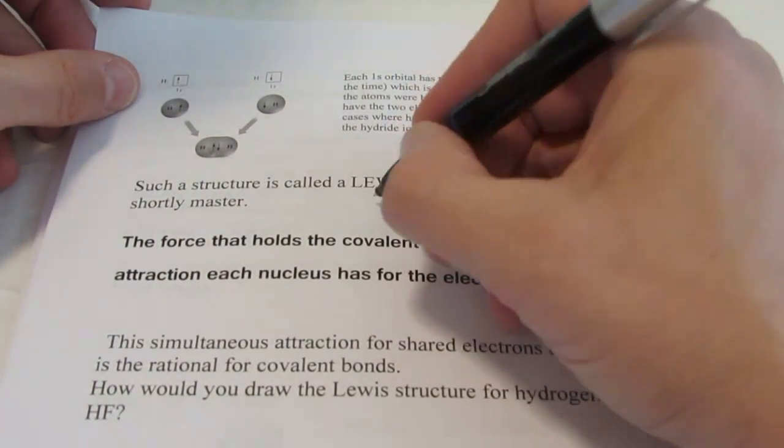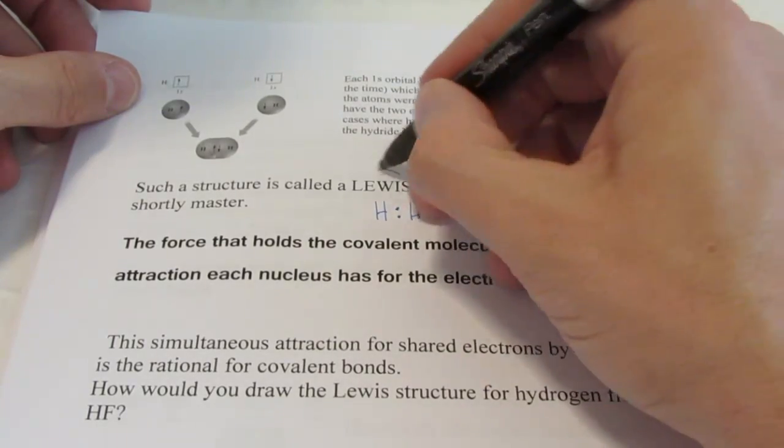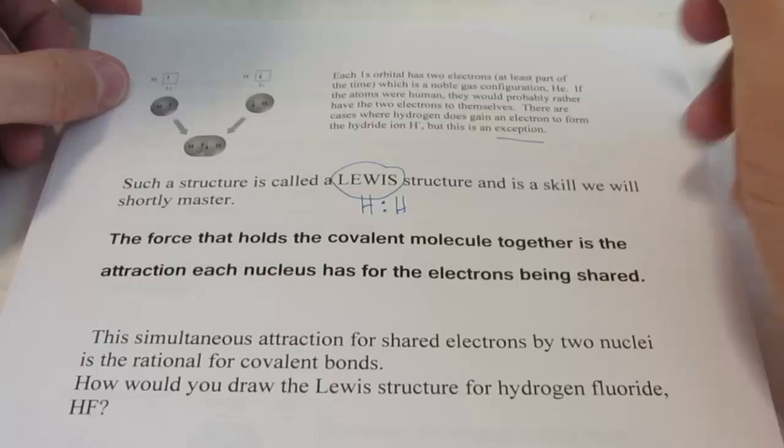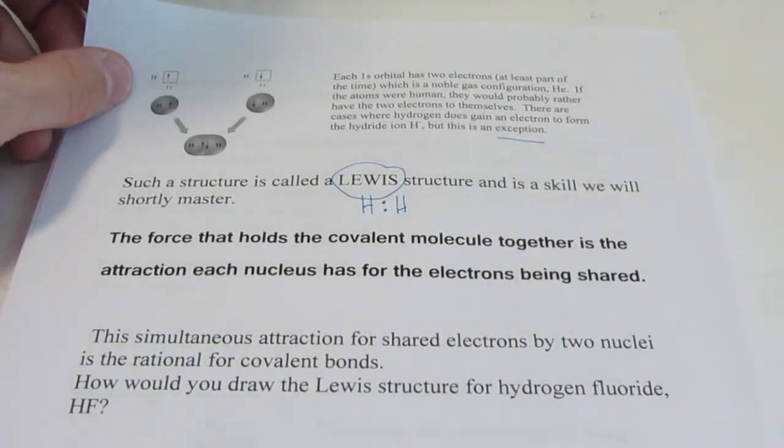Each 1s orbital has two electrons, at least part of the time, which is the noble gas configuration for helium.